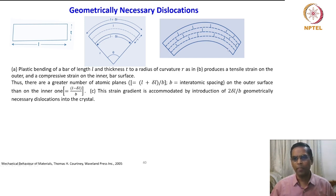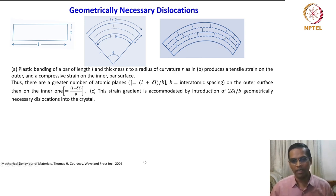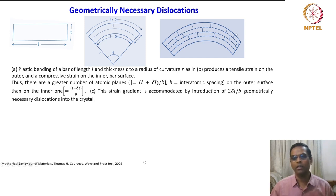The increase in length of the outer surface and the decrease in length of the inner surface can be accommodated by introducing edge dislocations of similar sign. This kind of extension of length is possible by introducing dislocations on several planes in the crystal.